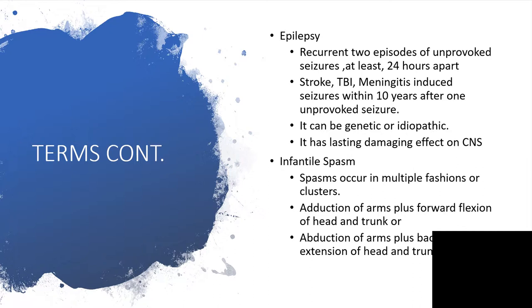There is a scenario called Infantile Spasm. Spasm occurs in multiple fashions or clusters. Adoption of arms with foreflexion of head and trunk.